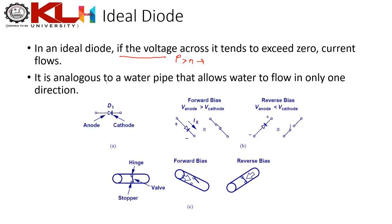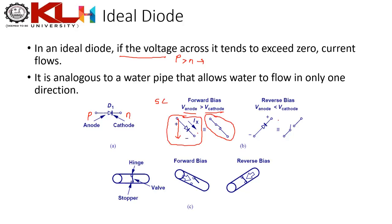The anode is the p-region and the cathode is the n-region. When the anode is at higher potential than the cathode — forward bias — current flows, and we model the ideal diode as a short circuit. SC stands for short circuit.